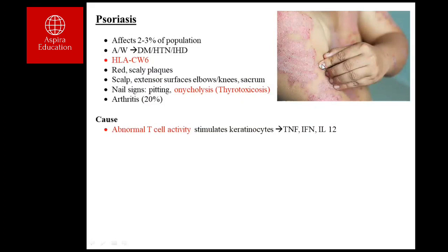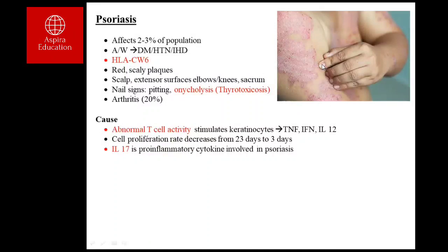Psoriasis is an autoimmune disease. Abnormal T-cell activity stimulates keratinocytes to produce TNF, interferon, and IL-12, causing keratinocyte proliferation. Normal proliferation takes 20–25 days, but in psoriasis it is shortened to 3–5 days, causing excessive scaling. IL-17 is a key pro-inflammatory cytokine involved. Psoriasis is also an independent risk factor for cardiovascular disease, including myocardial infarction and stroke.